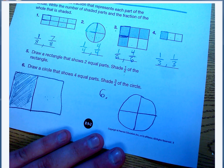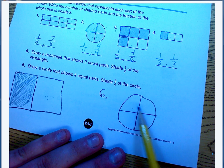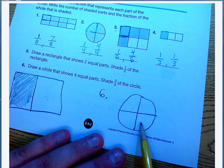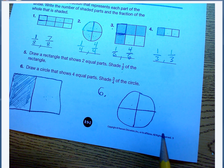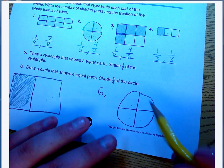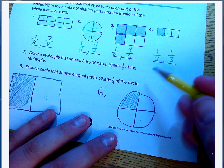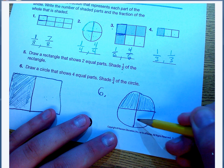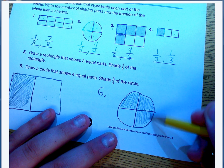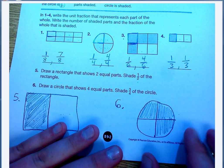Number six, it says draw a circle that shows four equal parts. One, two, three, four. And then shade three-fourths of that circle, so three out of the four. There's one out of the four, two out of the four, and three out of the four. That's three-fourths of that circle.